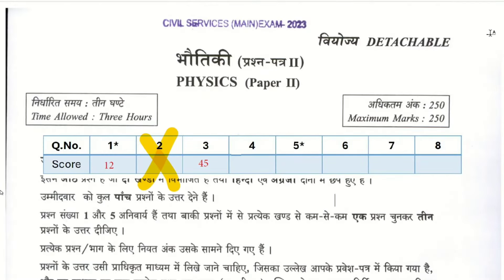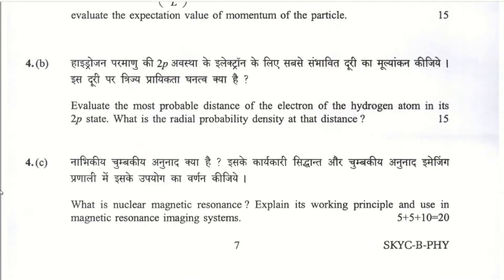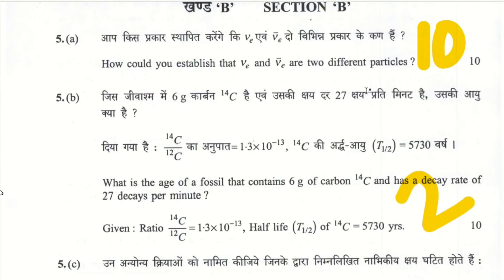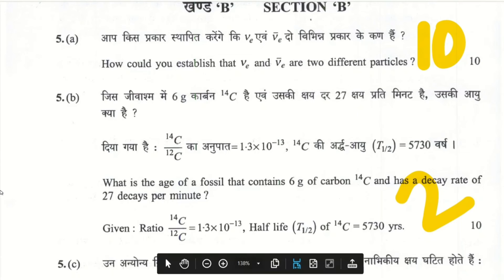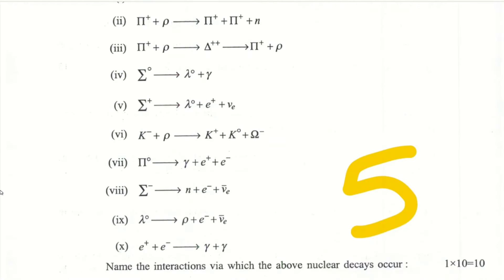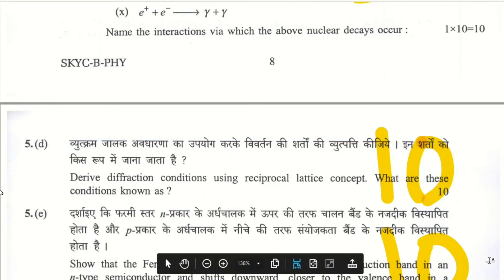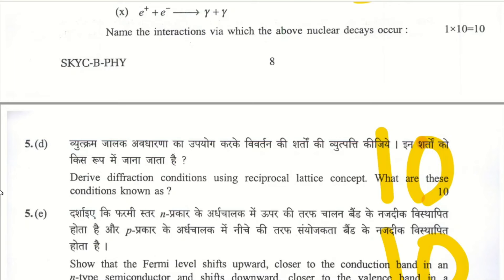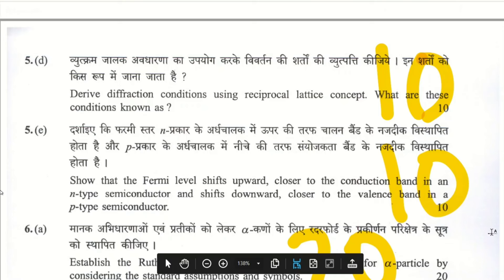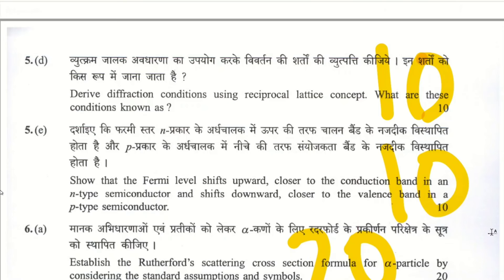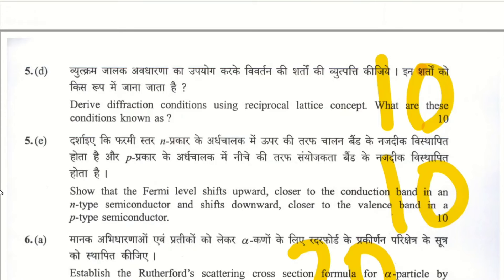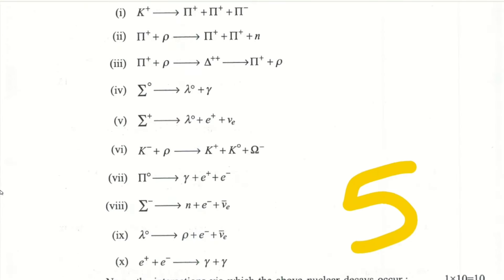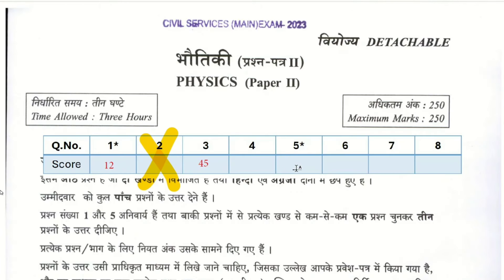We skip Question 4. Question 5: Differentiating between anti-neutrino and neutrino by helicity — theory question, 20 marks. Decay prediction — 5 marks. Reciprocal lattice concept — purely theoretical, 10 marks. Fermi level shifts in n-type and p-type — theory, so total for Question 5: 37 marks.